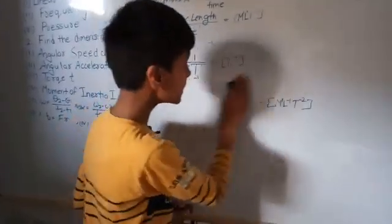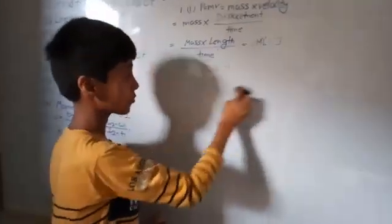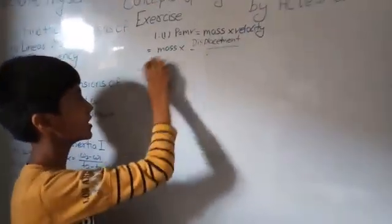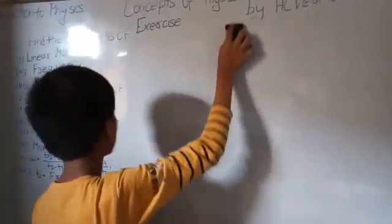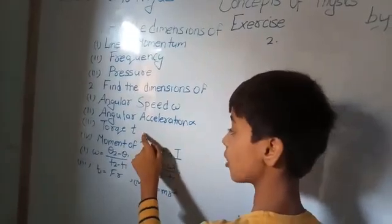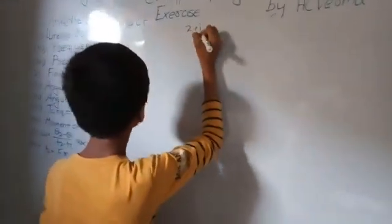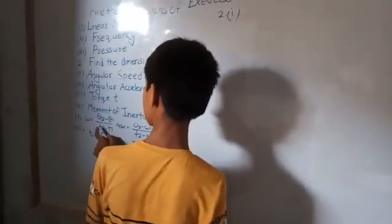That completes the first question. The second question is similar — we find dimensions of different physical quantities. Question two: find the dimensions of angular speed (omega), angular acceleration (alpha), torque, and moment of inertia (I). Let us start with angular speed, omega.